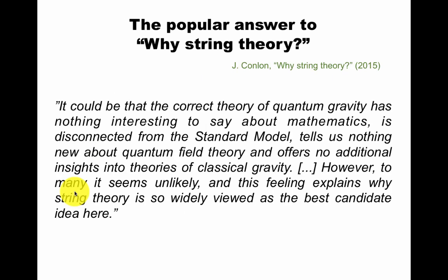The popular answer was given by Conlon in his book. It could be that the correct theory of quantum gravity has nothing interesting to say about mathematics, is disconnected from the Standard Model, tells us nothing new about quantum field theory, and offers no additional insights into theories of classical gravity. However, to many it seems unlikely, and this feeling explains why string theory is so widely viewed as the best candidate idea here.